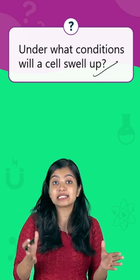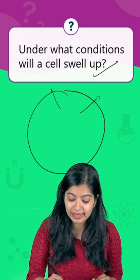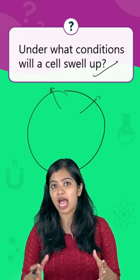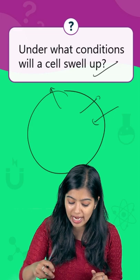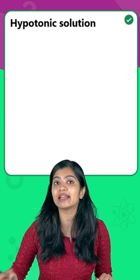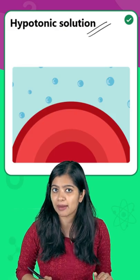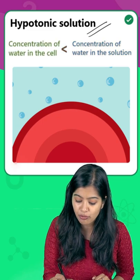Now when we say that a cell needs to swell up, it means that there is going to be an increase in volume, and this happens when something enters into the cell. We know that when we place a cell in a hypotonic solution, the cell would swell up.